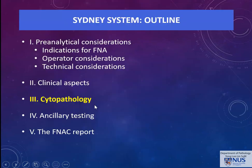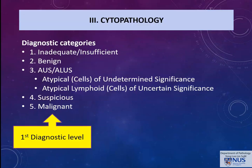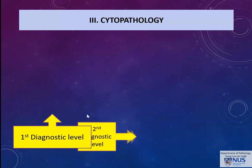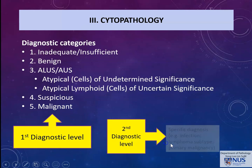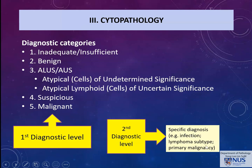Next, we look at cytopathology, which covers the diagnostic categories. There are five diagnostic categories in this proposed system. These categories in the cytology report are known as the first diagnostic level. The second diagnostic level is the specific diagnosis — for example, specific infection or lymphoma subtype based on clinical and ancillary testing. The first diagnostic level is required, and the second diagnostic level is recommended if possible.